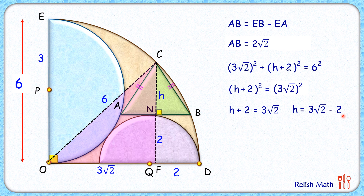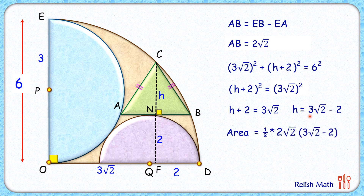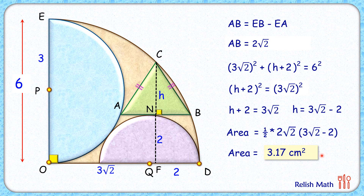The area of the triangle is half times base times height. The base is two root two and the height is three root two minus two. Solving it, we get the area of the triangle as six minus two root two centimeters squared, which is approximately 3.17 centimeters squared. I hope you enjoyed the solution — I will see you in the next video, till then, bye bye.